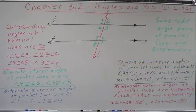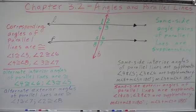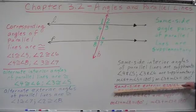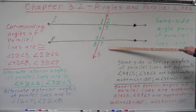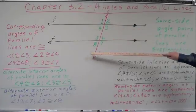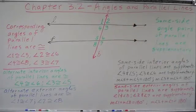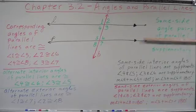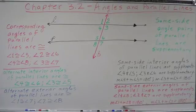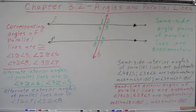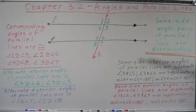Some books don't even cover same side exterior angles, but we're going to teach them because they have important relationships you need to know. Same side exterior angles — angles two and seven, and angles one and eight — are on the same side exterior to the parallel lines, and they are also supplementary. So all the same side angle pairs of parallel lines are supplementary. The measure of angle one plus the measure of angle eight equals 180, and the measure of angle two plus the measure of angle seven equals 180.